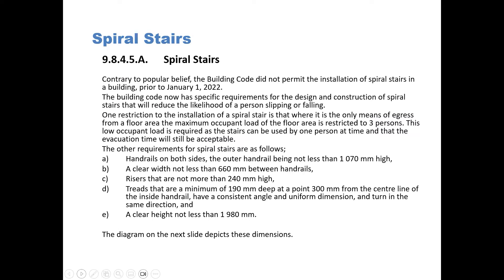9845A Spiral Stairs. Contrary to popular belief, the Building Code did not permit the installation of spiral stairs in a building prior to January 1, 2022. The Building Code now has specific requirements for the design and construction of spiral stairs that will reduce the likelihood of a person slipping or falling, since spiral stairs can be quite hazardous when trying to use them.